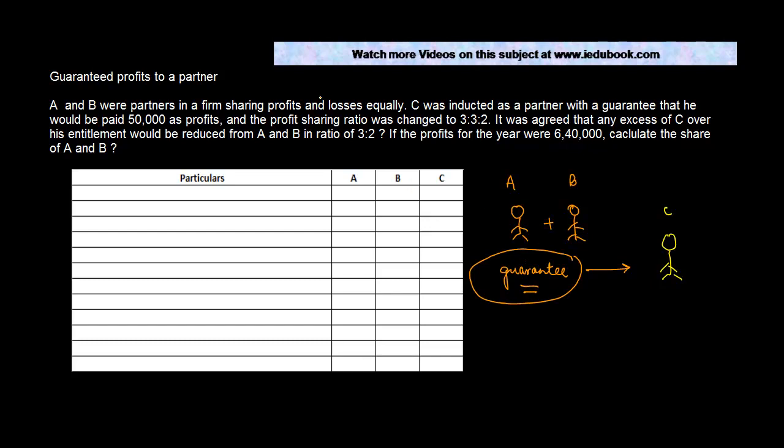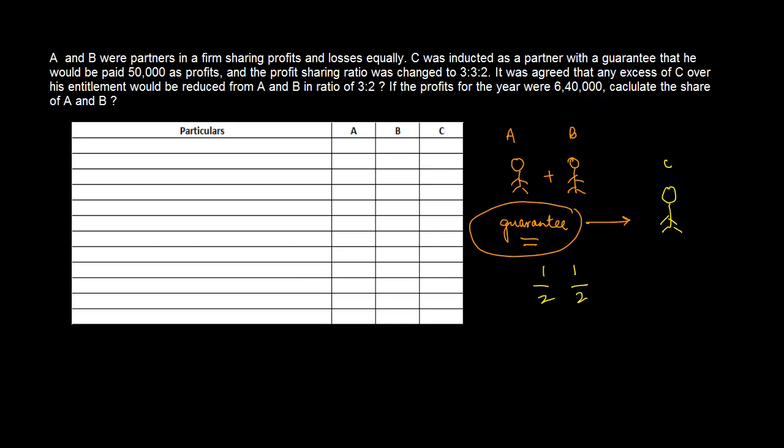So the old profit sharing ratio in this particular case was 1 is to 1 for A and B, or 1 upon 2, 1 upon 2. They agreed to share profits in the ratio of 3 is to 3 is to 2. Sum of these three is 3 plus 3, 6 plus 2, 8, so 3 by 8, 3 by 8, 2 by 8.